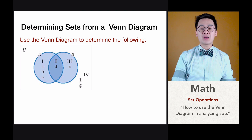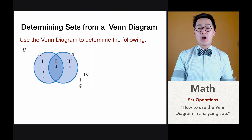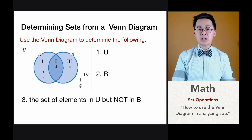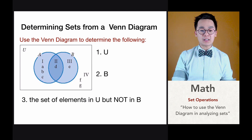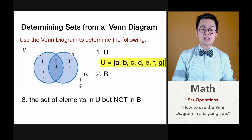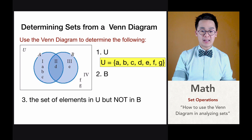Looking at this Venn diagram, let's identify some subsets. Starting with set U, we're looking for all the elements in the union set. In this case it will be A, B, C, D, E, F and G — all the elements inside the union set are included in set U.